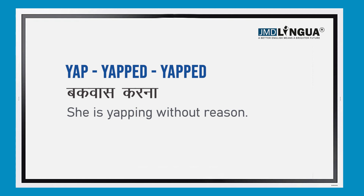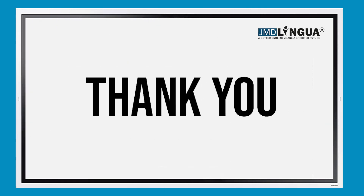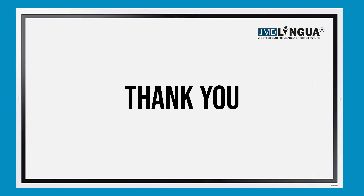Next verb is 'yap' — the meaning of yap is 'bakwas karna'. For example: she is yapping without reason. So guys, these are the verbs. Thank you.